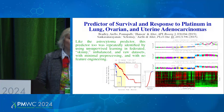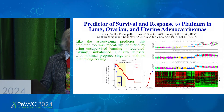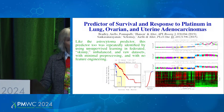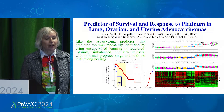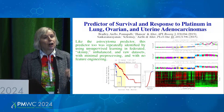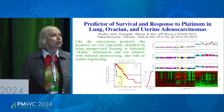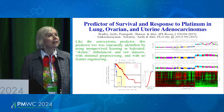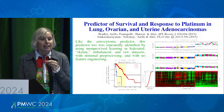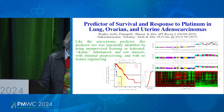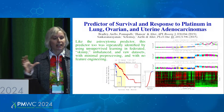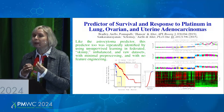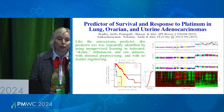We found similar predictors looking at different types of cancers. For example, in adenocarcinomas — specifically uterine, ovarian, and lung — we found a predictor of survival and response to platinum, which is the first-line chemotherapy treatment for many of these diseases. Just like the astrocytoma predictor, this too was identified using unsupervised learning in federated, skinny, balanced, and raw datasets with minimal pre-processing and with no feature engineering.